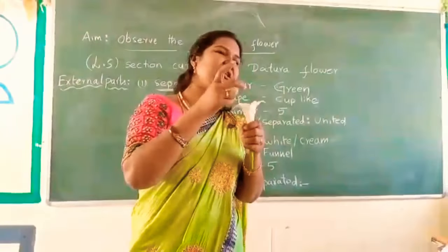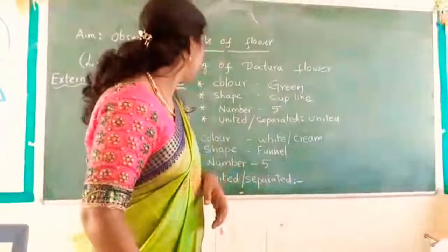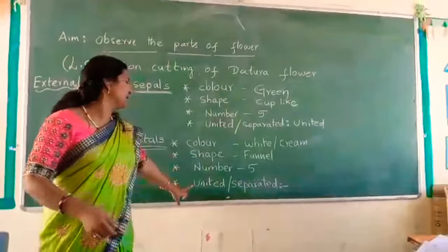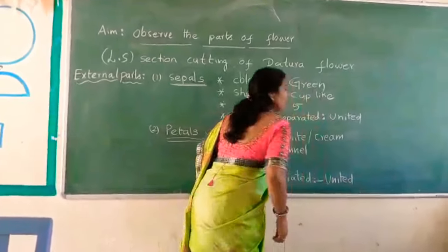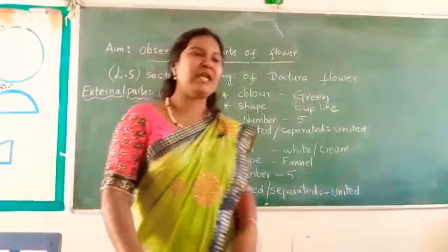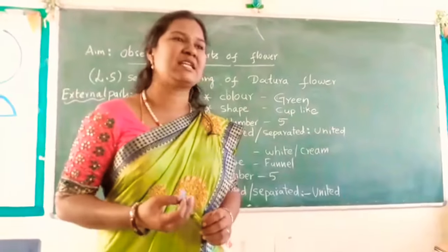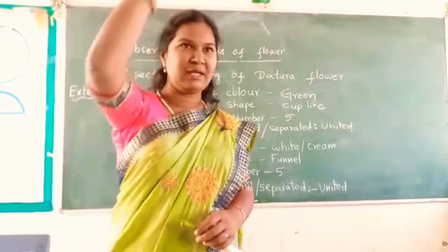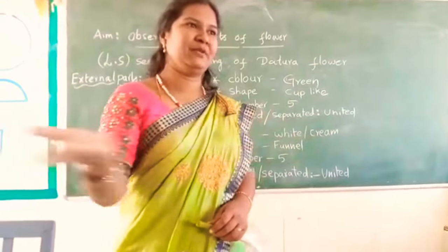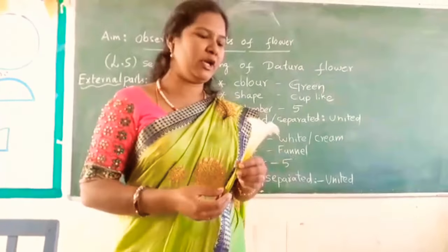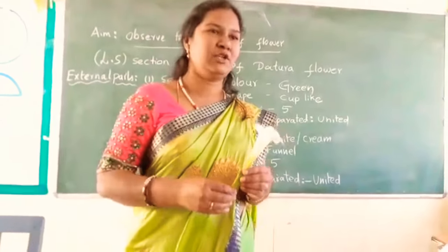But at the top of the position, we can slightly see the lines where they are attached. So the petals in datura are united. Let us now look at the internal parts of the datura flower. For this, we can do a section cutting — longitudinal section cutting. Longitudinal means like this; transverse section means like this. Now we are going to do a longitudinal section of the datura flower to know its internal parts.